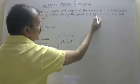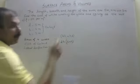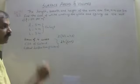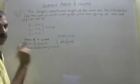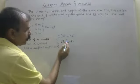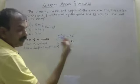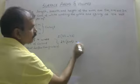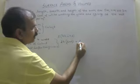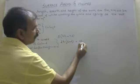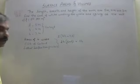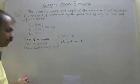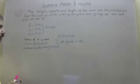The problem also mentions ceiling — ceiling means the top, the छत (roof). So we also have to whitewash the ceiling. Therefore we add plus l × b to the formula. Now let's substitute the values.